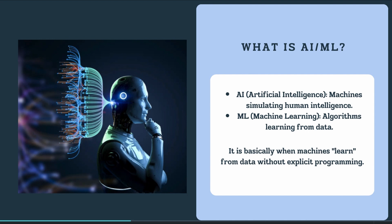Moving on to machine learning — ML is basically a subset of AI. It involves algorithms that learn patterns from data and make predictions or decisions based on that knowledge. The key idea behind ML is that machines can learn from data without being explicitly programmed to do so.